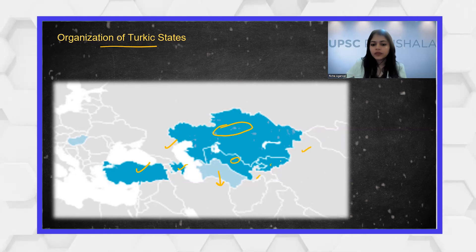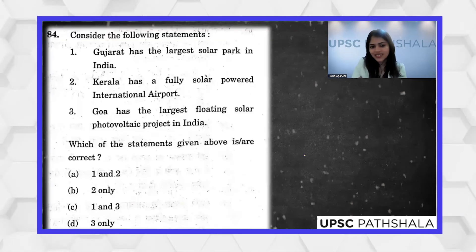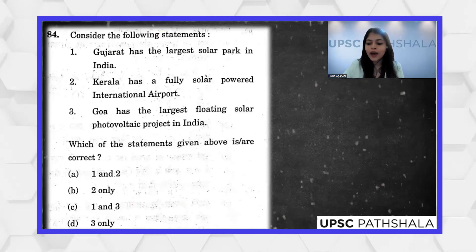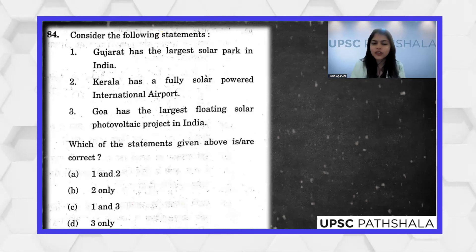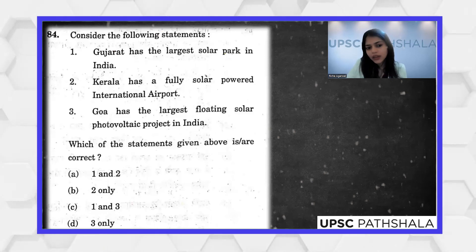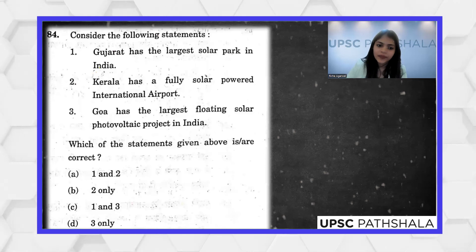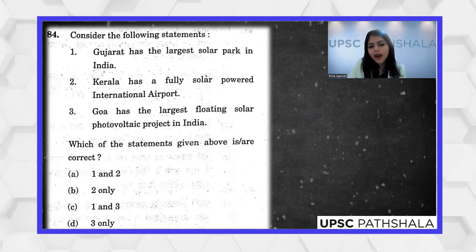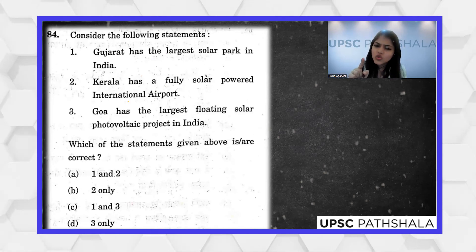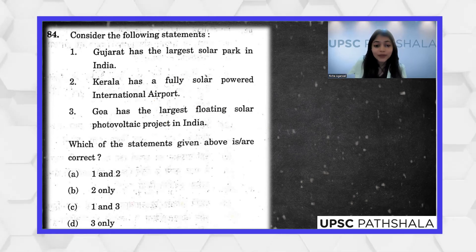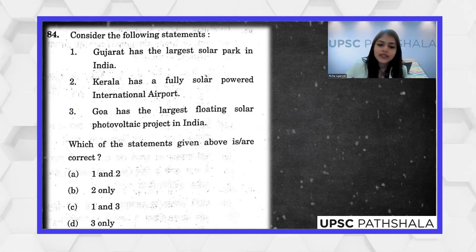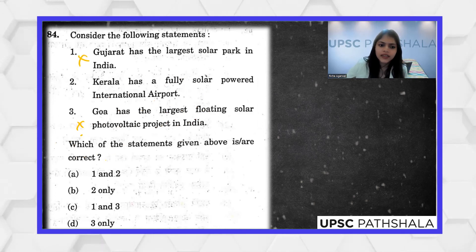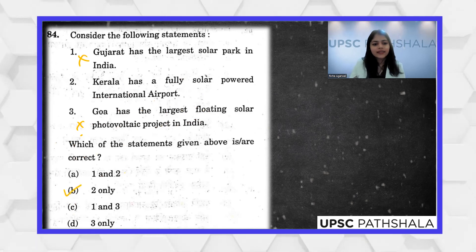Gujarat has the largest solar power plant in India — this is incorrect; the largest solar park is the Bhadla National Power Solar Park in Rajasthan. Gujarat has GIFT City, not the largest solar park. Kerala's Cochin Airport is actually the fully solar-powered international airport. The largest floating solar photovoltaic project was inaugurated by MK Stalin in Tamil Nadu. Statements one and three are incorrect; statement two is the only correct one, making B the answer.